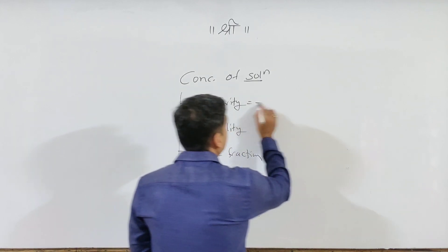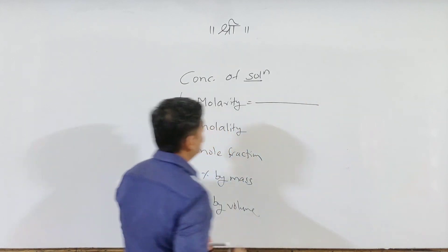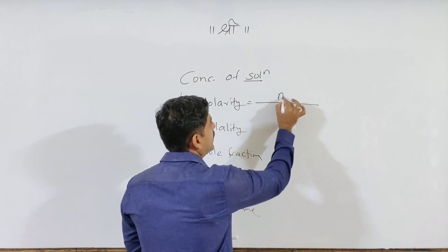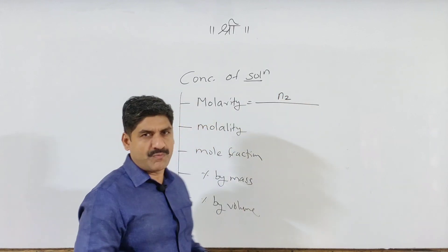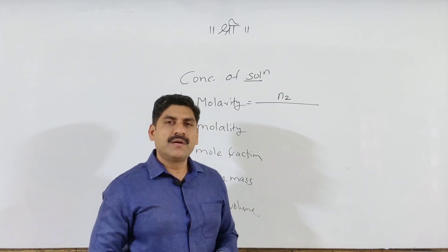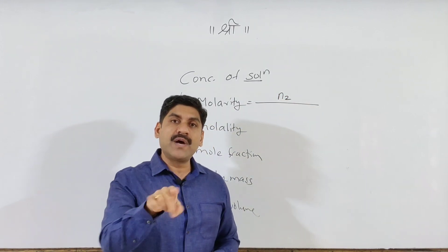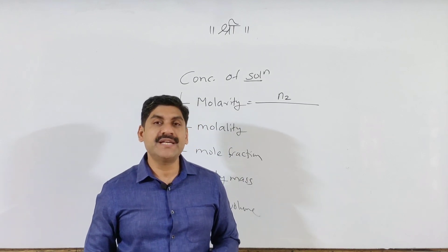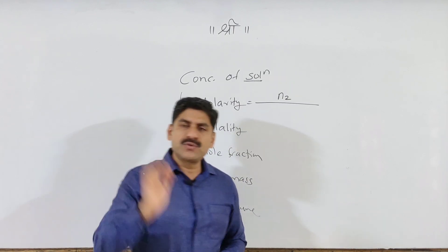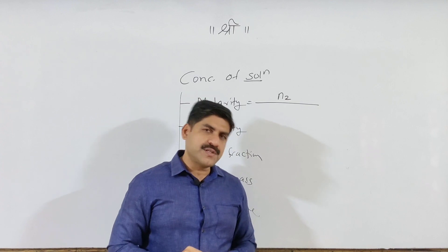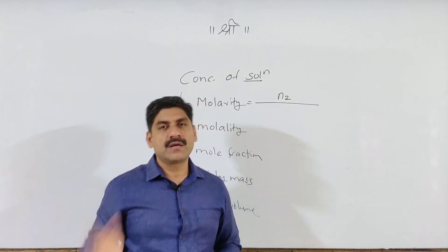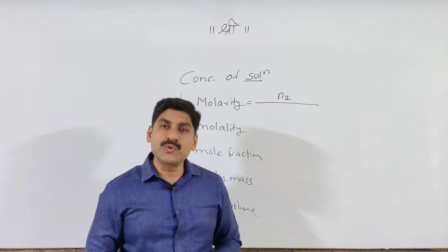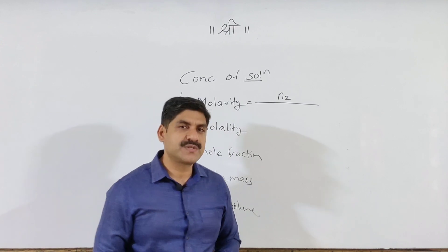Definitions — what are the definitions? Molarity is a ratio. Let me explain: n1 denotes the number of moles of solvent, and n2 denotes the number of moles of solute. We use the notation W1 for the mass of solvent and W2 for the mass of solute.